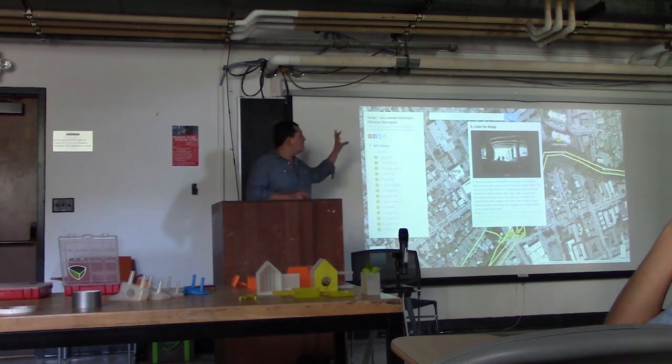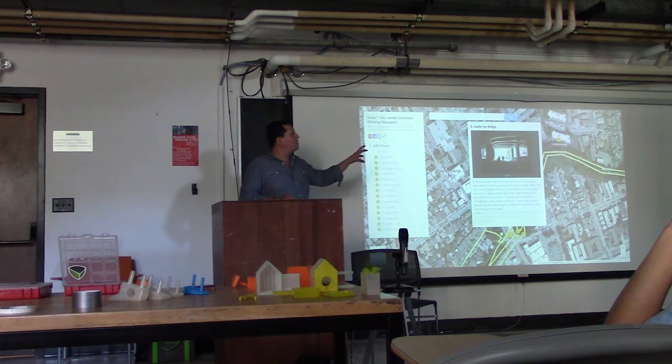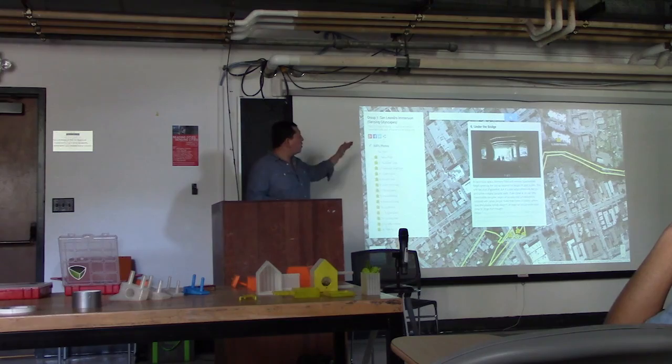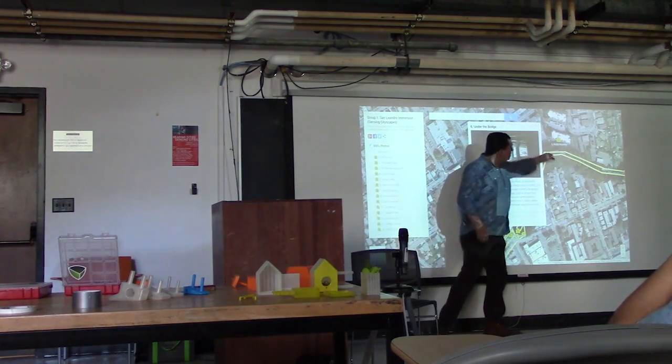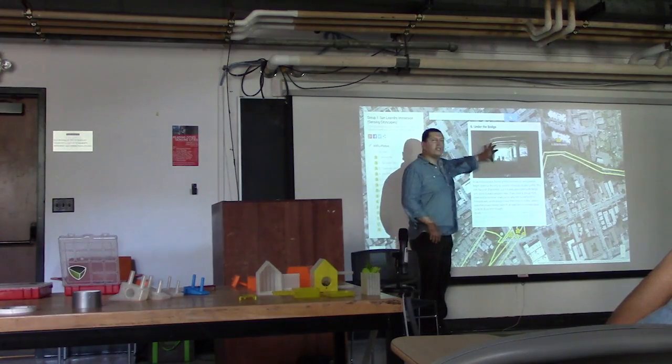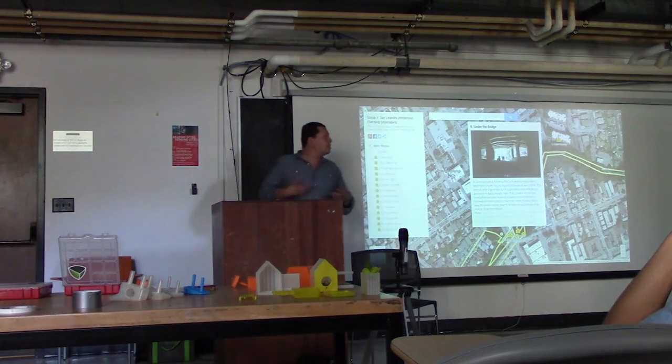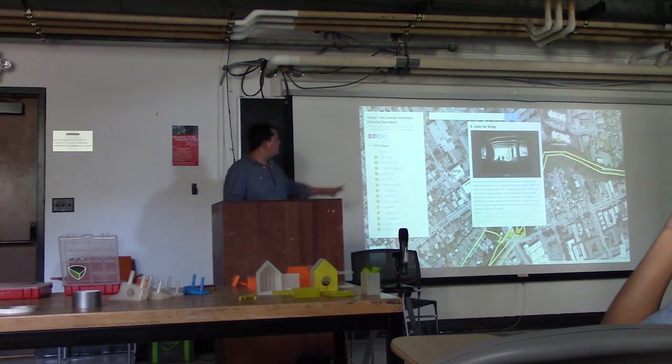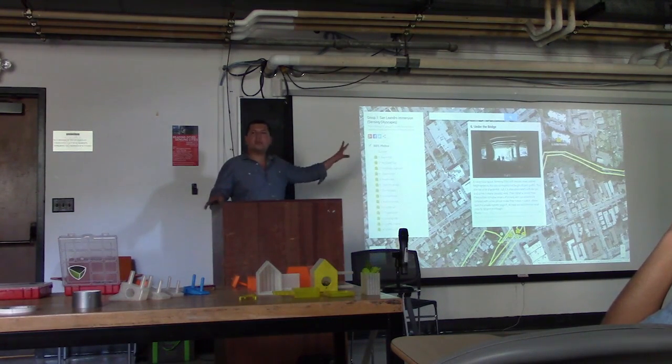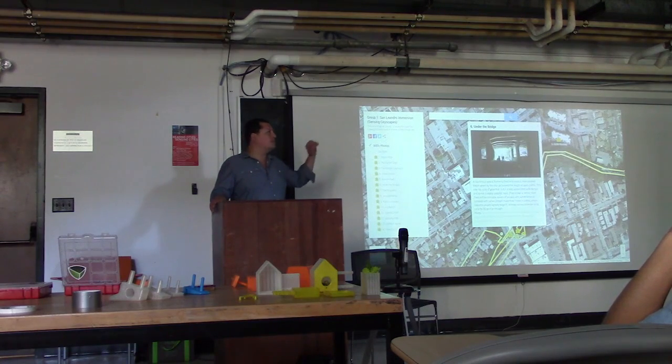We moved into the creek, and then the students mapped. The students mapped the creek using Google Maps Engine Pro and began to document. They're able to track their trail and their access into the creek, show particular sites that are important or interesting, unveil that hidden potential of this place and map it out. This becomes accessible, public, and shareable.